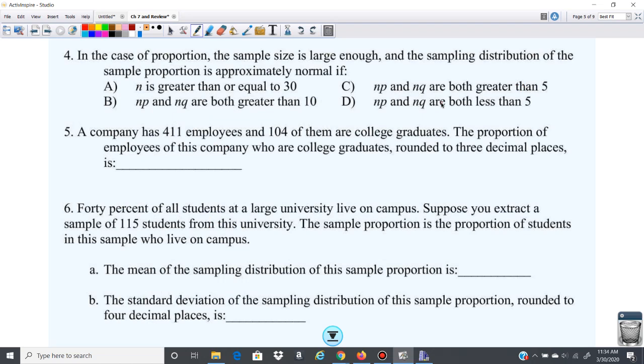Next problem we have, one more vocab here. In the case of proportion, the sample size is large enough. The sampling distribution of the sample proportion is normal if, and it's this one here, NP and NQ are greater than five.